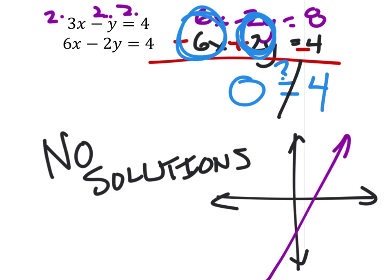And the second equation would have looked something like this. So since there's no solutions, on the graph it means that the two lines do not intersect, which means that they're parallel.